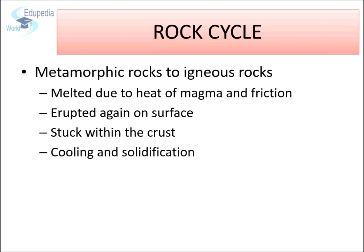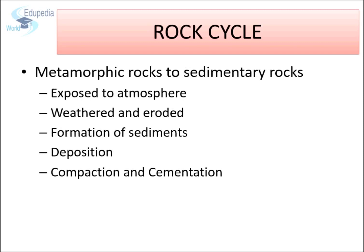As these metamorphic rocks are subjected to more heat, they melt. This heat can be generated due to magma and friction produced by the earth's crust. Just like sedimentary rocks, these molten metamorphic rocks would erupt again on the surface or cool down within the crust to form new igneous rocks. As metamorphic rocks are exposed to the surface, they also face the harsh atmosphere, which begins breaking them down and disintegrating them into sediments. These sediments further deposit into low-lying areas, get compacted and cemented to form sedimentary rocks.